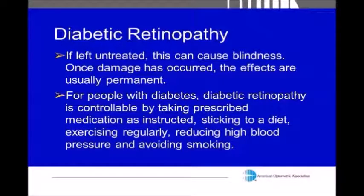The longer a person has diabetes, the more likely they are to develop diabetic retinopathy, and if left untreated it can cause blindness. Once damage has occurred, the effects are usually permanent. For those who have diabetes, it can be controlled by taking prescribed medications, following up with your primary care doctor, sticking to a strict diet, exercising regularly, and reducing high blood pressure and avoiding smoking. I can't stress the importance of comprehensive and regular eye exams, because this is really one of the most preventable eye diseases, but oftentimes it is overlooked.